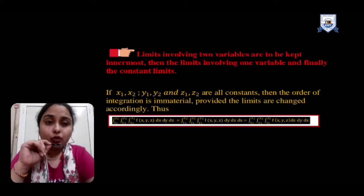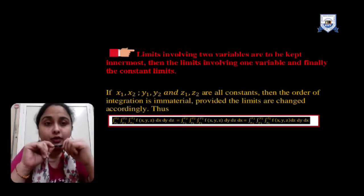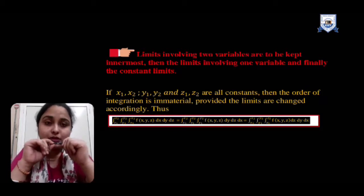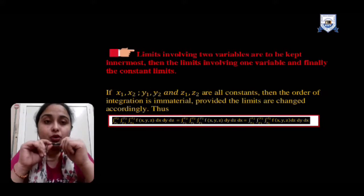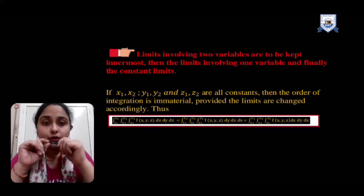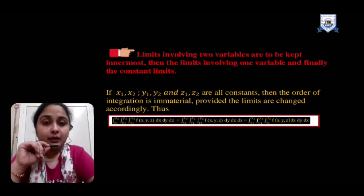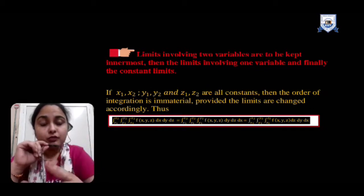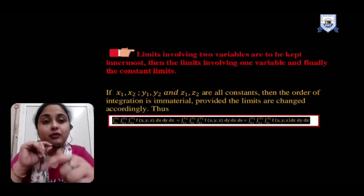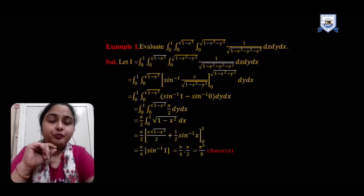The important highlighted rule: limits involving two variables are to be kept innermost, then the limit involving one variable, and finally the constant limit. If x1, x2, y1, y2, z1, z2 are all constant limits, then the order of integration is immaterial — we can integrate in any order. However, we must be careful to apply each variable's assigned limits together with that variable's integration step.